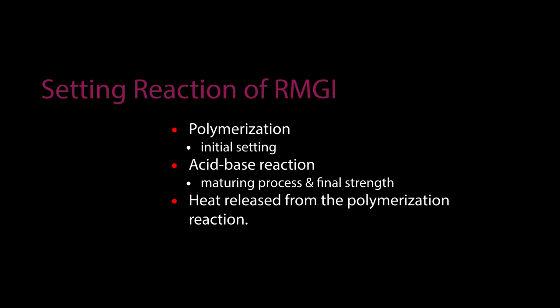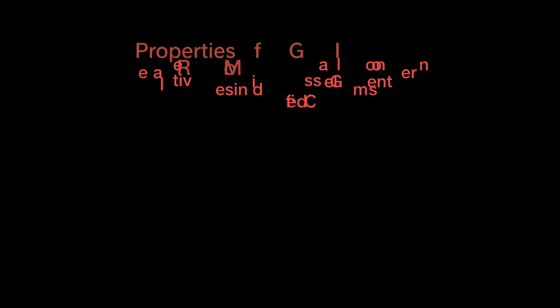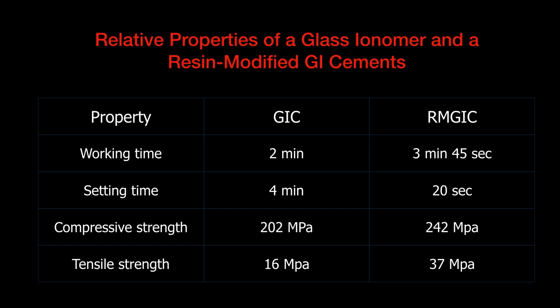The final strength of RMGIC comes from the maturing process and heat release from the polymerization reaction. Properties: higher strength than conventional GIC, higher adhesion to resin material, less water solubility, and can be polished after curing. Comparing conventional GIC and RMGIC: the major differences lie in working time, setting time, and compressive strength — compressive strength of conventional GIC is 202 megapascals, raised to 242 megapascals with RMGIC.